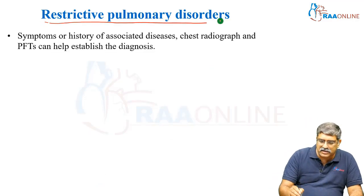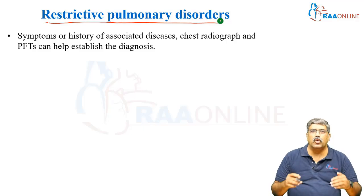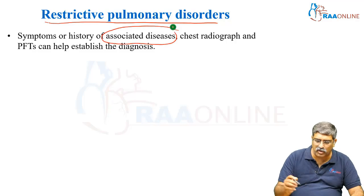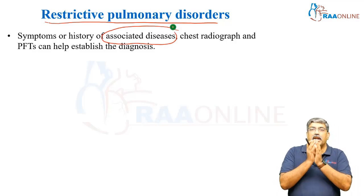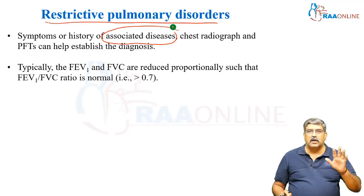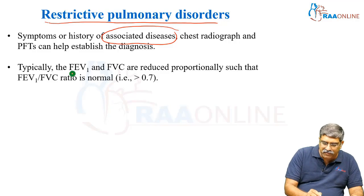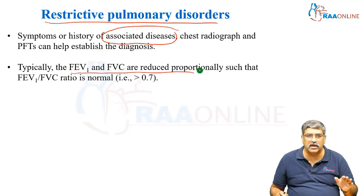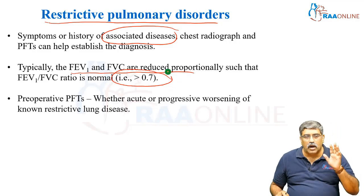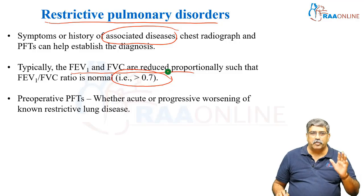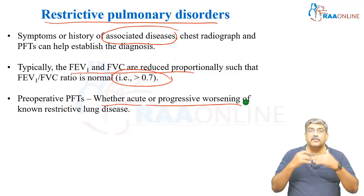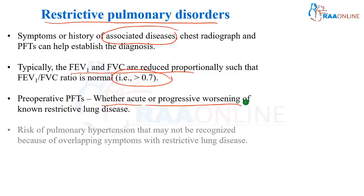Whenever you have a restrictive pulmonary disease, you look at symptoms or history of associated disease like kyphoscoliosis, take a chest radiograph, and PFT can also help in establishing the diagnosis. The FEV1 and FVC are reduced proportionally so that the ratio is usually normal. Preoperative PFT helps to decide whether there is acute or progressive worsening of restrictive lung disease.